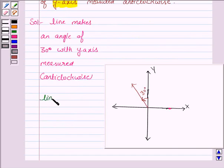The line makes an angle of 90 plus 30, that is 120 degrees, with positive direction of x-axis.